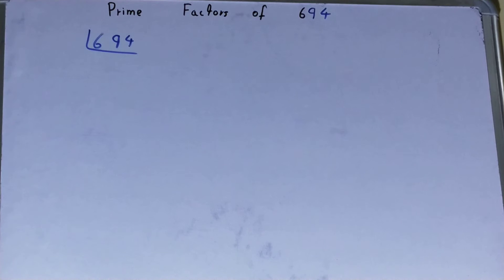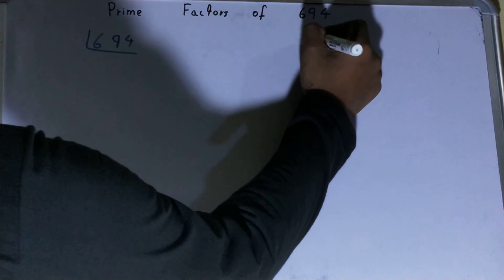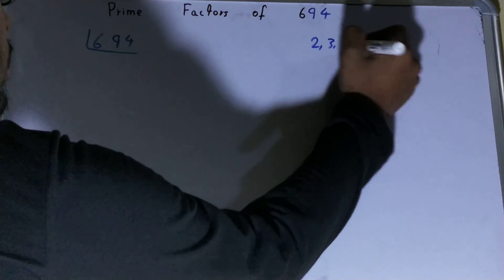All right, and before solving this any further, you must know what prime numbers are. Prime numbers are numbers that are divisible by one and the number itself, like 2, 3, 5, 7, and so on.